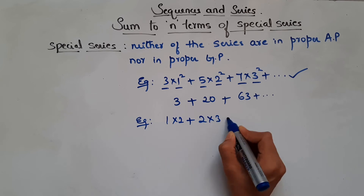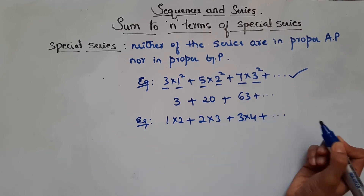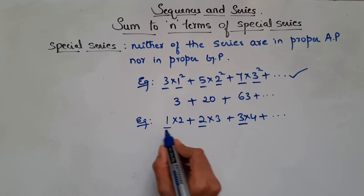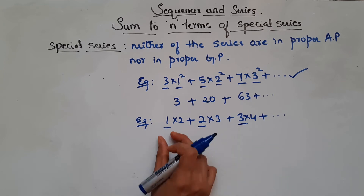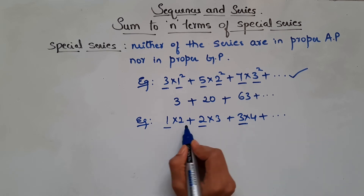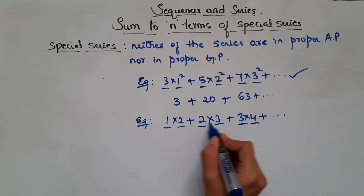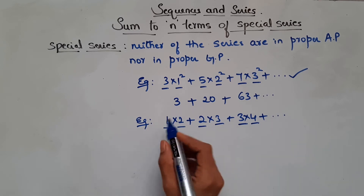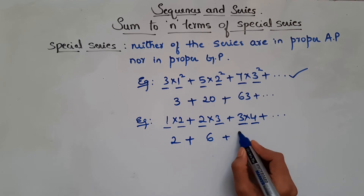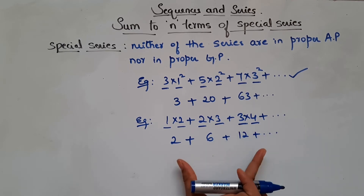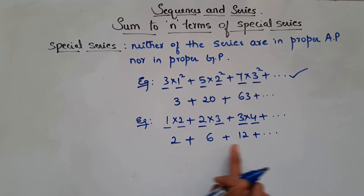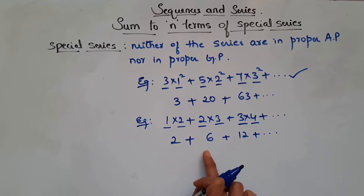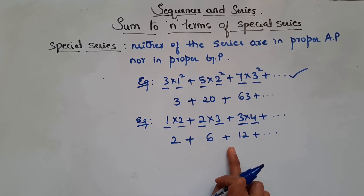Let me give one more example: 1·2 + 2·3 + 3·4 + and so on. The first part 1, 2, 3 is in AP, and the second part 2, 3, 4 is also in AP. But the overall terms 2, 6, 12... are not in AP (6−2=4, 12−6=6) nor in GP (6/2=3, 12/6=2). So such a series is called a special series.